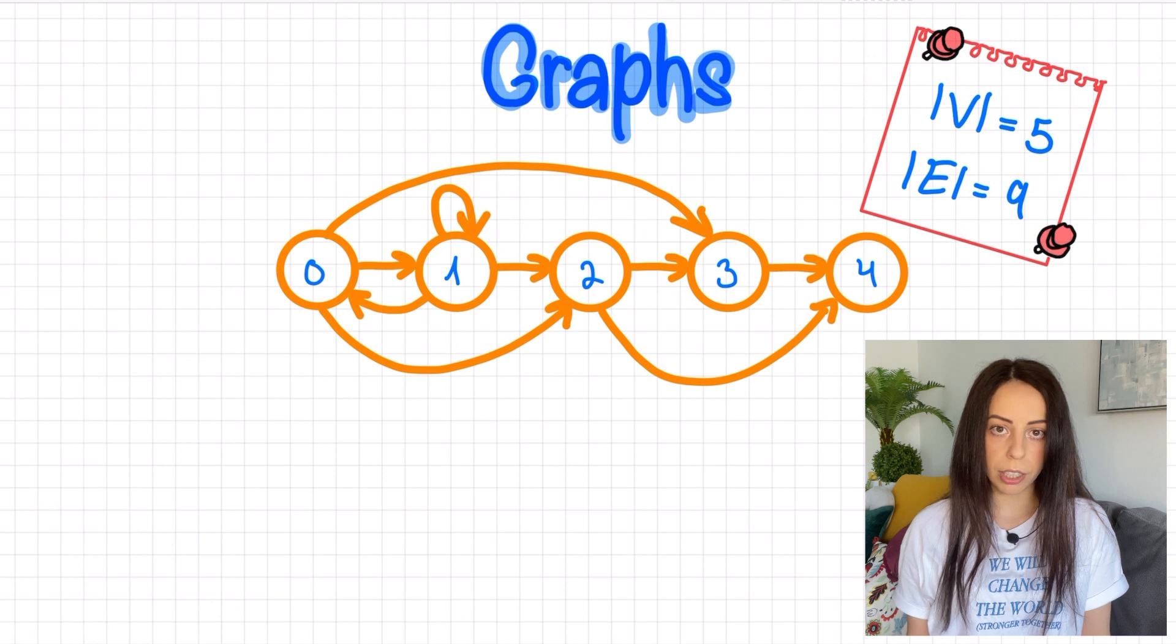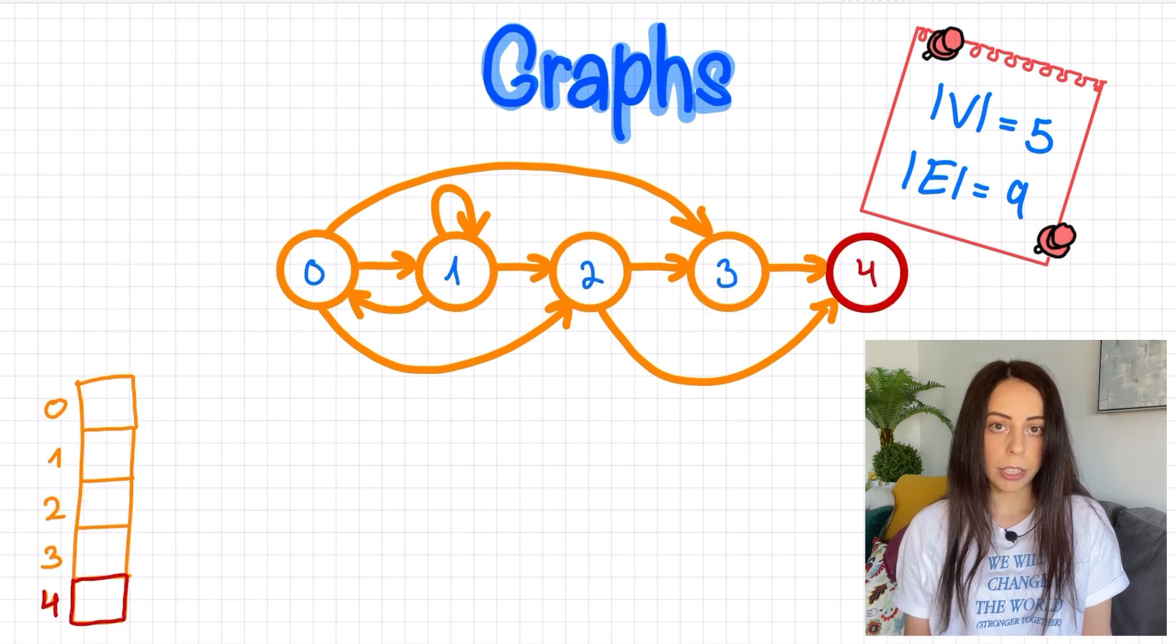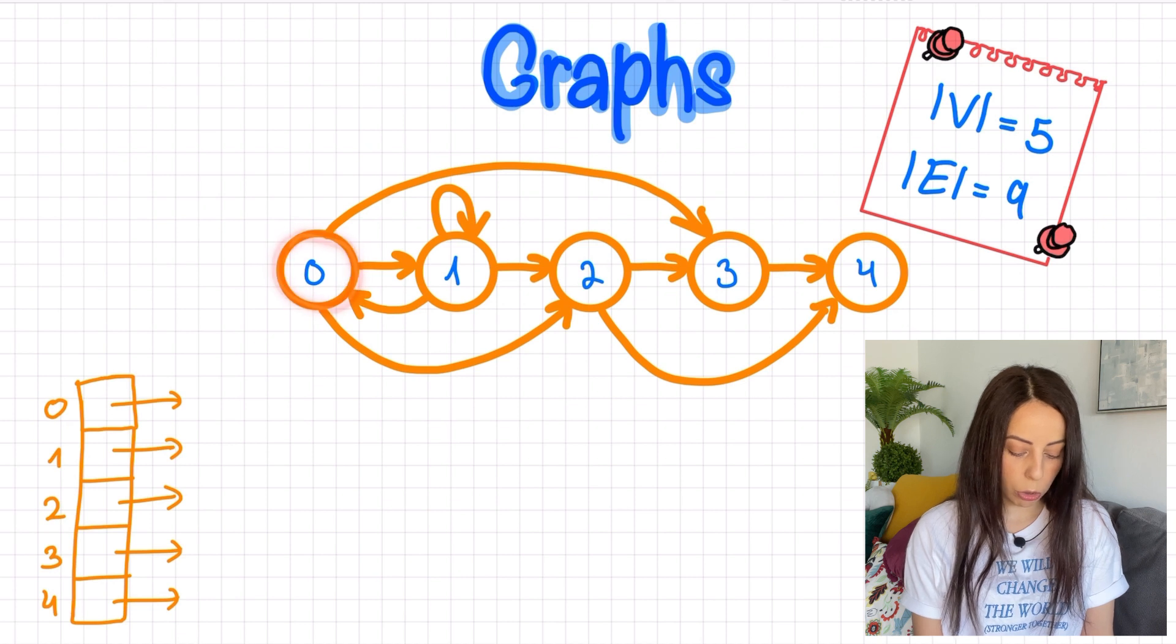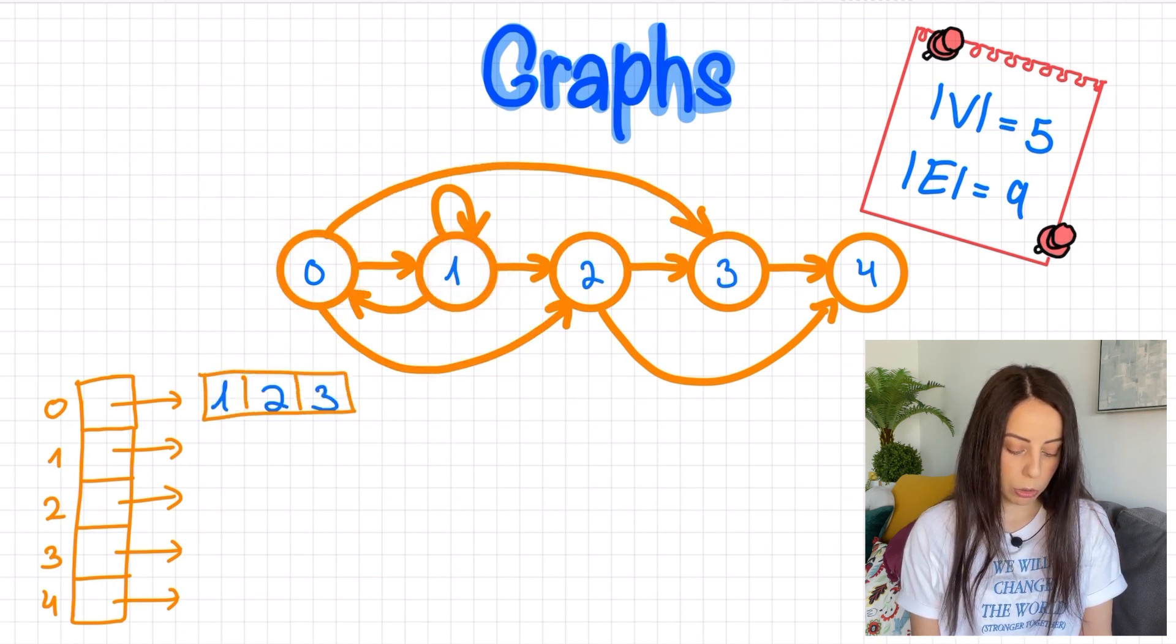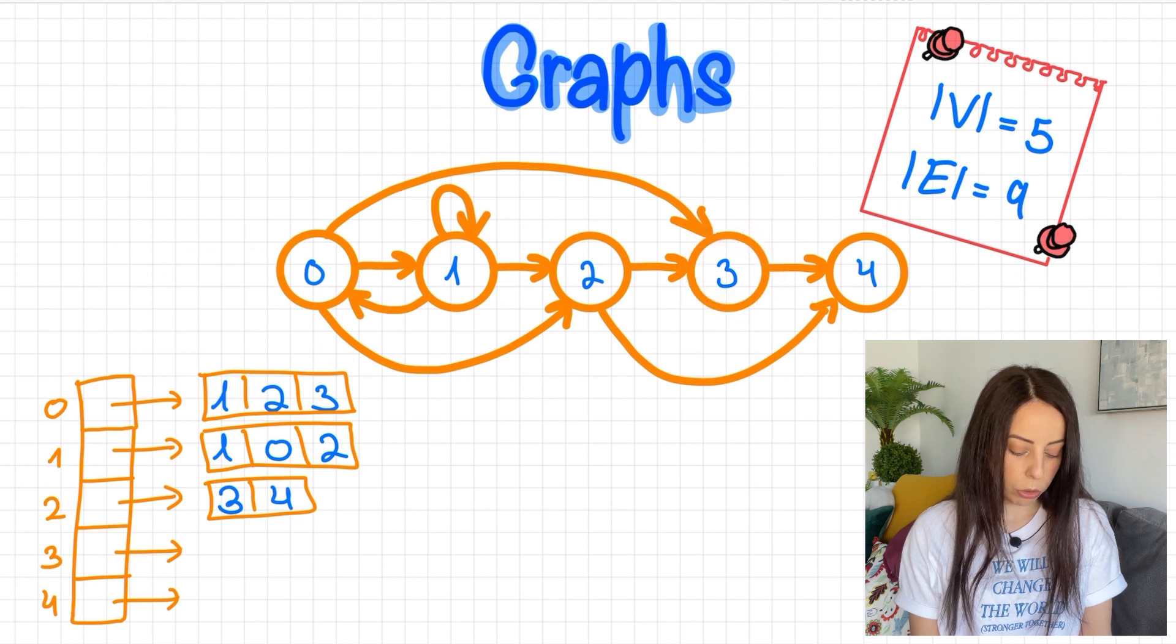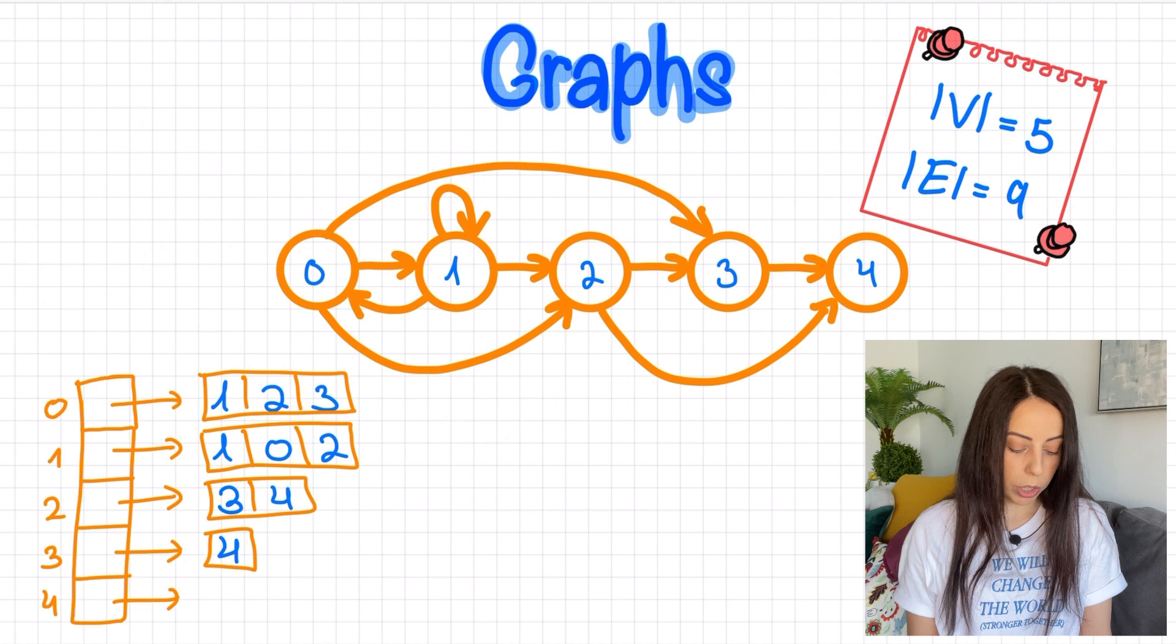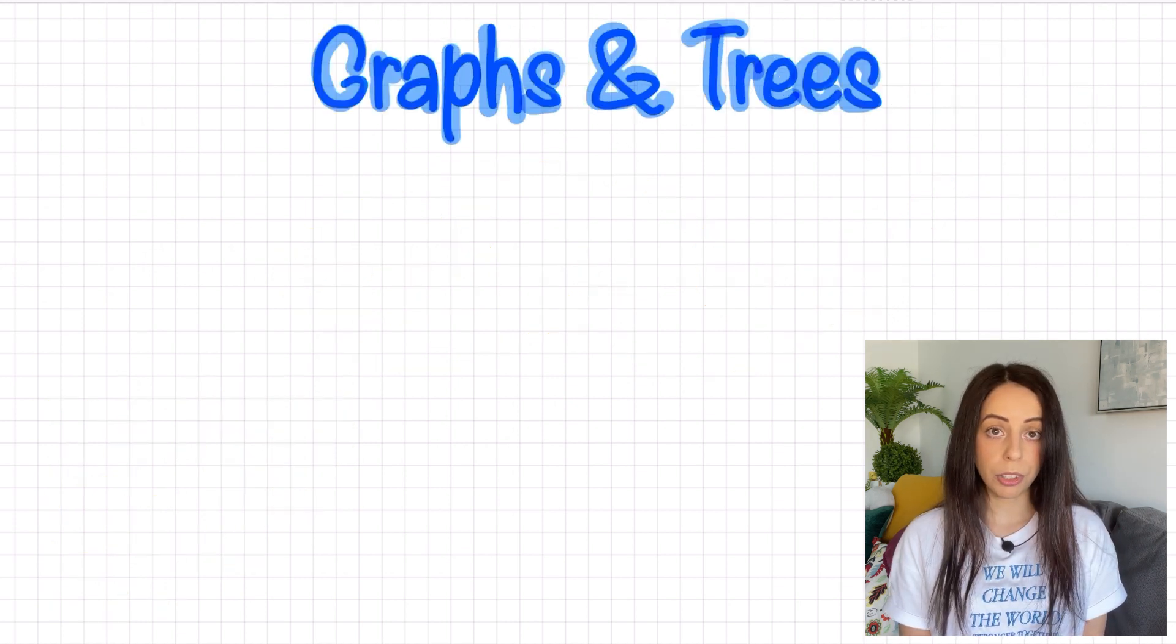Graphs are usually implemented with adjacency lists. You have an array of size V, so a cell for each node. And then for each cell, you have a list of nodes that this node connects to. So in this example, node 0 has outgoing edges to nodes 1, 2, and 3. Node 1 has outgoing edges to nodes 0 and 2. Node 2 connects to node 3 and 4. Node 3 connects to node 4. And node 4 has no outgoing edges. So this array of arrays represents this graph and this graph only.